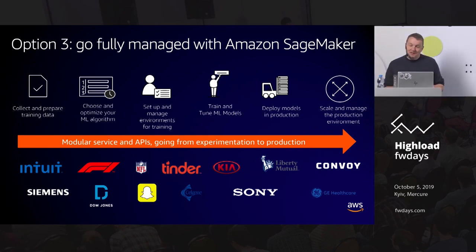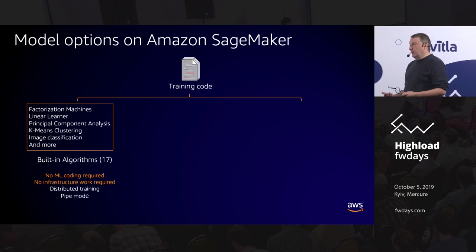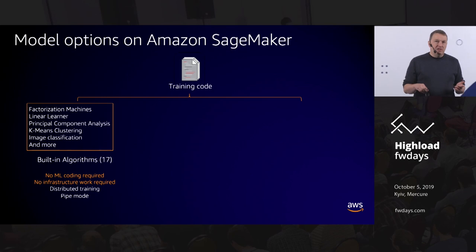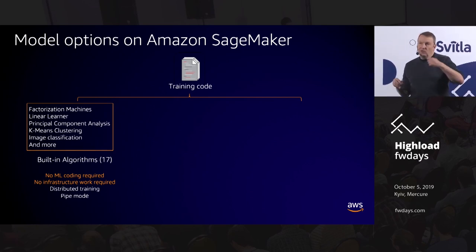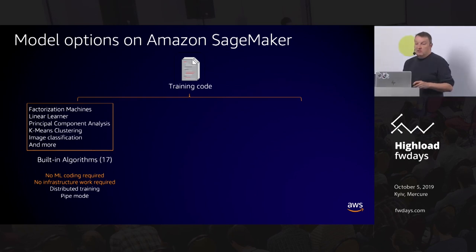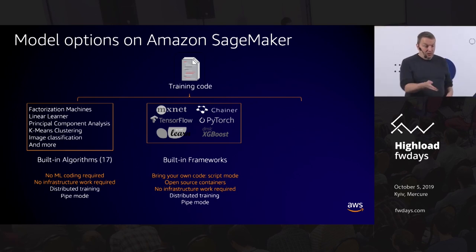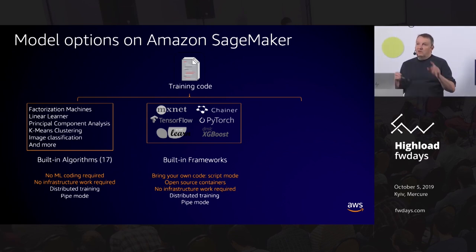It's a popular service used by all kinds of companies. For training on SageMaker you have three options. First: built-in algorithms — great if you don't have a lot of ML skills or don't want to write ML code. Need clustering, linear regression at scale, image classification? Grab one of the 17 built-in algorithms, set some parameters, and train. No machine learning code needed. Second: if you have existing code for TensorFlow, PyTorch, scikit-learn, etc., you can take that code and with minimal changes run it on SageMaker's built-in frameworks to train and deploy at scale.